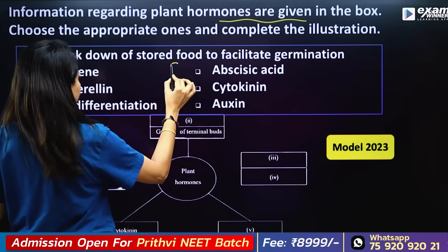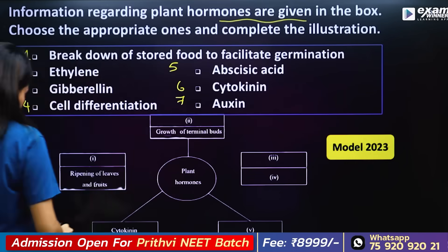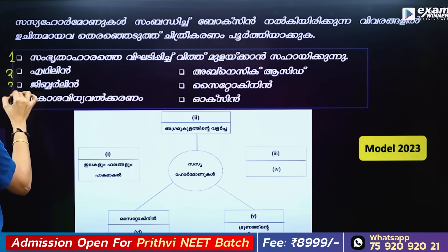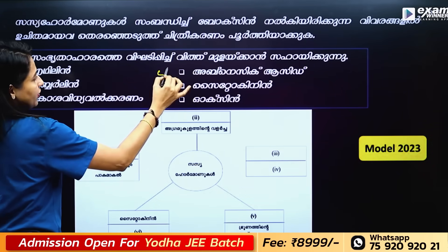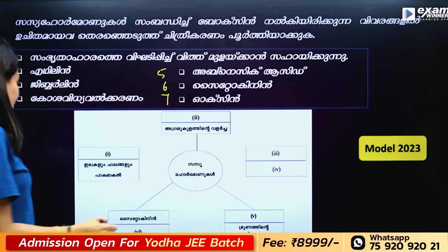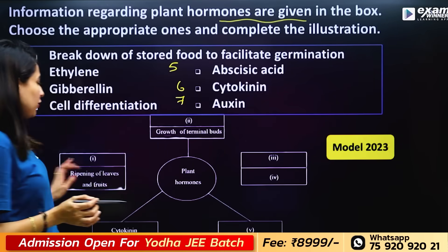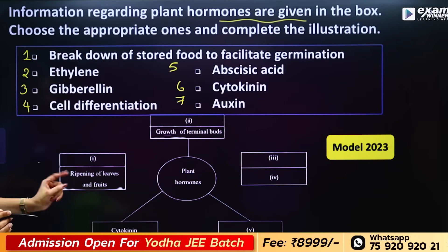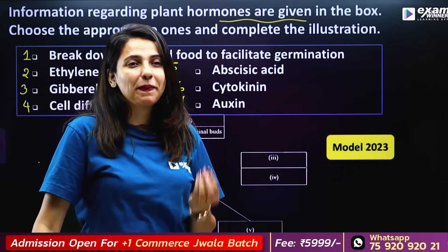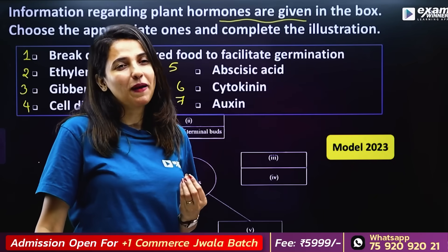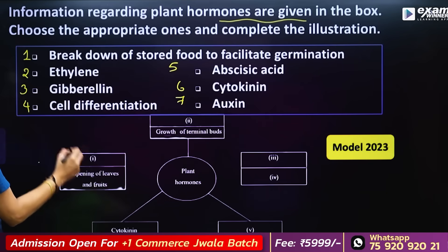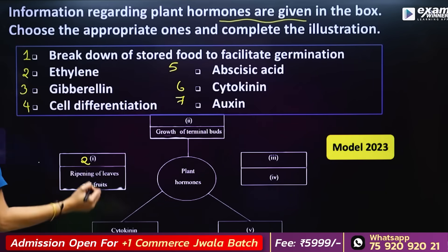We have to deal with numbers 5, 6, 7. Ripening of leaves and fruit — this is the plant hormone Ethylene.